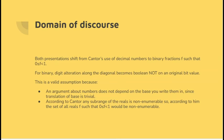In both presentations we shift from using decimal numbers to binary fractions in the range 0 to 1. This simplifies things because digit alteration along the diagonal becomes just Boolean NOT. And this is a valid extension because an argument about numbers doesn't depend on whether you write them down as decimals or binary. And according to Cantor, the number of reals in any sub-range of the reals is also non-enumerable. So if we can demonstrate that the range 0 to 1 is enumerable, we've demolished this proof.